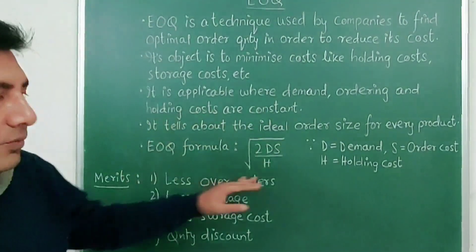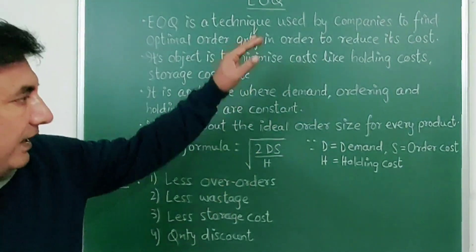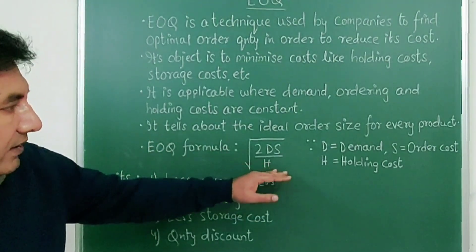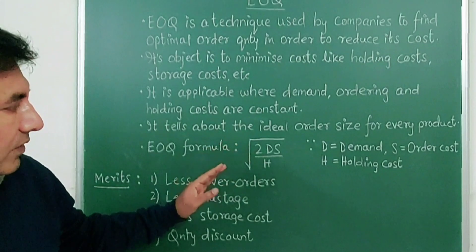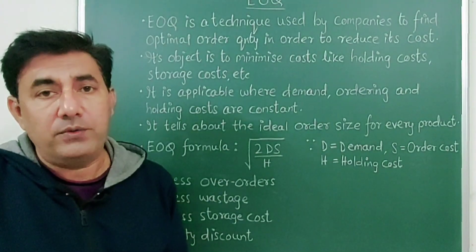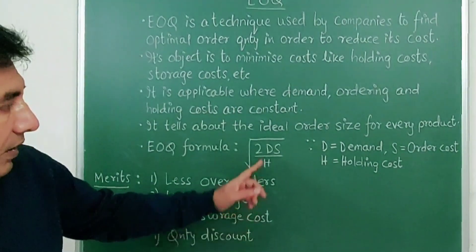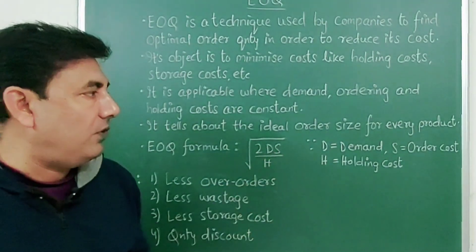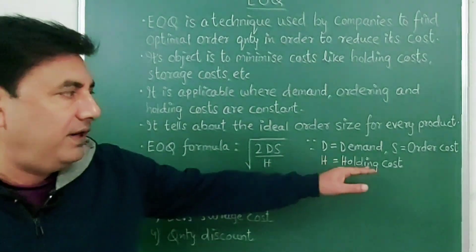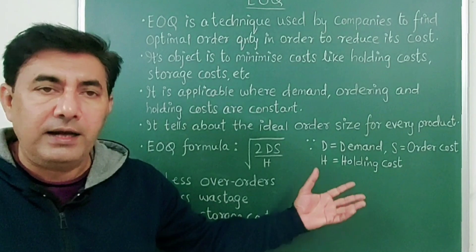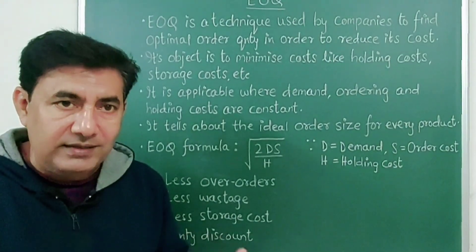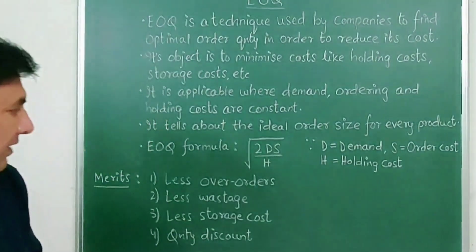Then you have to explain this formula. If in the exam a question comes on EOQ, so you can write this formula. What is the formula? Square root of 2DS by H, under square root. Now D stands for demand, S for order cost, and H for holding cost. Here you can take any one figure and you can explain it, to make the explanation a bit longer.